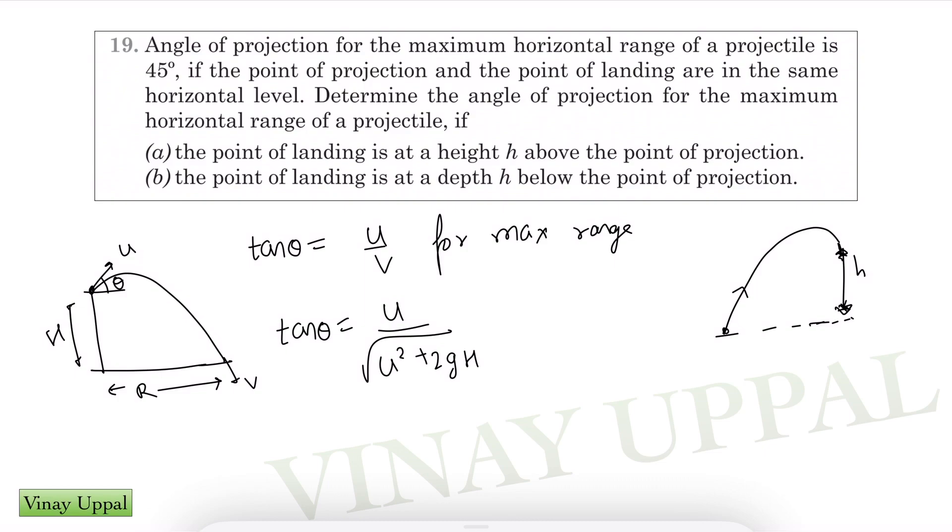It's very straightforward because tan theta will be u divided by final speed, which will be u squared plus 2gh. This is the case where the landing is h below. So what I am doing is part b first. And in the textbook, they have given the answer in terms of sine theta.